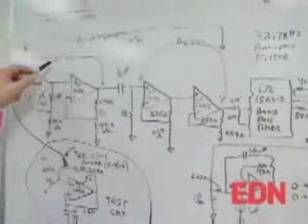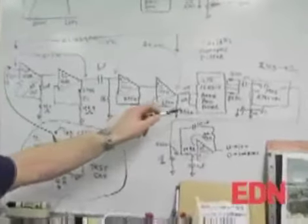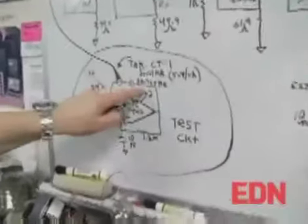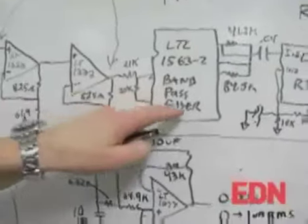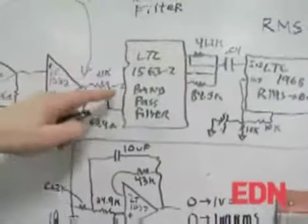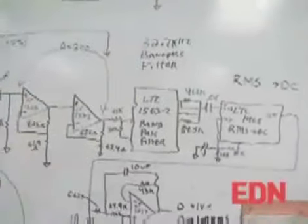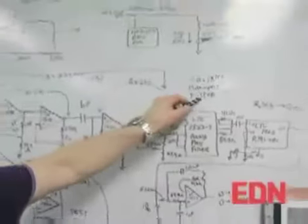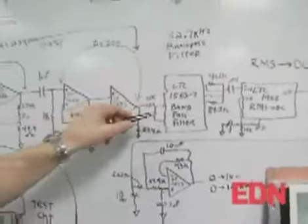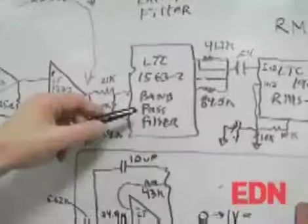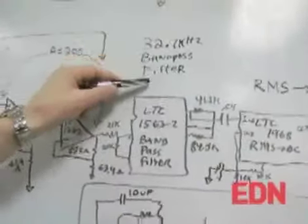Up to this point, the entire gain chain is broadband. Now what I want to do is take advantage of the fact that I'm operating at one frequency and one frequency only and narrow band the amplifier. To do that, we run through this 1563-2 bandpass filter centered at 32.7 kilohertz. The slopes are very steep on this—approximately 20 dB attenuation either side of 32 kilohertz. What that does is it just kills the noise in the measurement for us. The gain of this at the peak of the bandpass is unity.